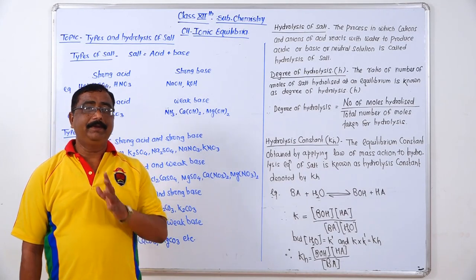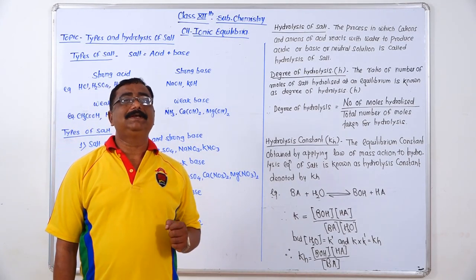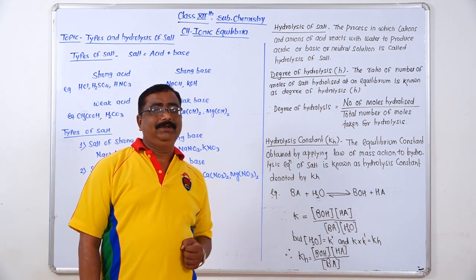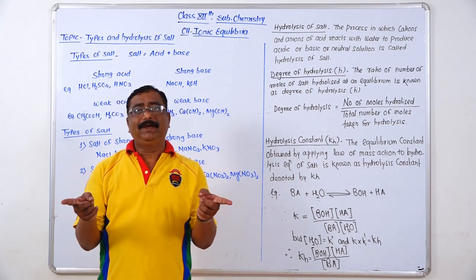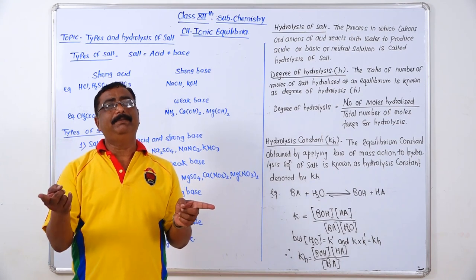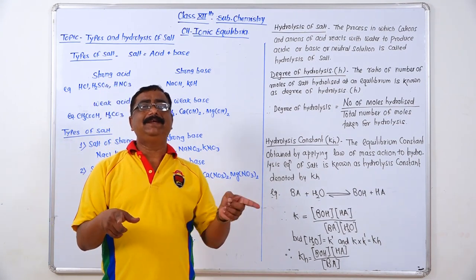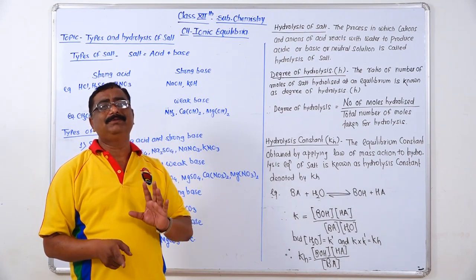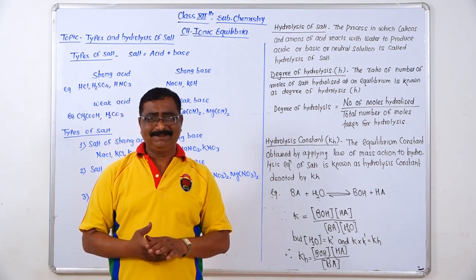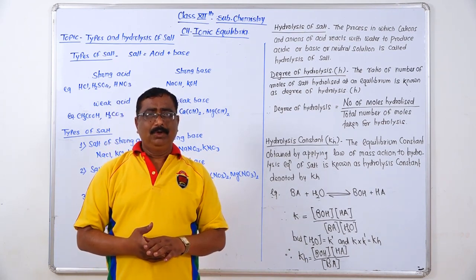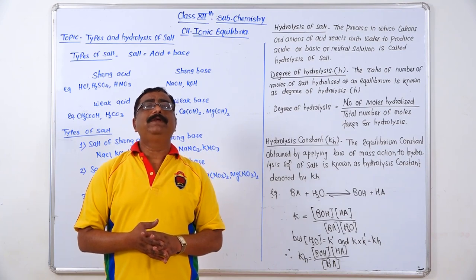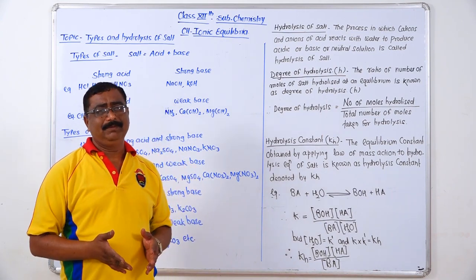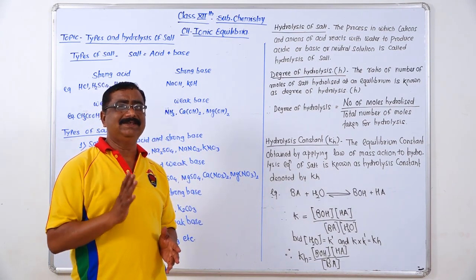So, in the last period we discussed about buffer solution and the mechanism of buffer solution. We saw two types of buffer solution: acidic buffer and basic buffer, and how they maintain their pH even by the addition of a small amount of strong acid and strong base. Today, we have to discuss about the types of salts and hydrolysis of salts.